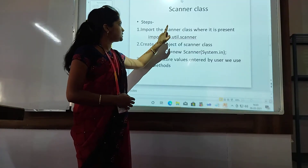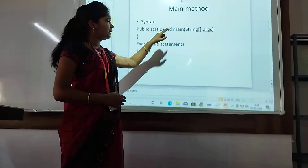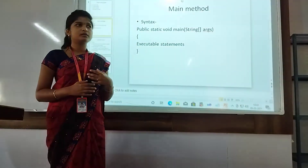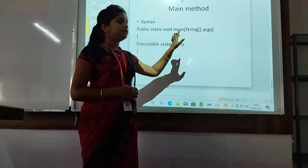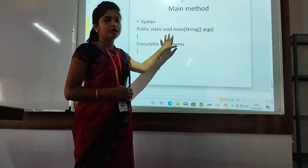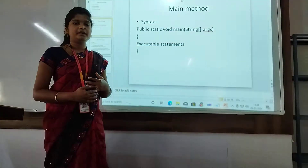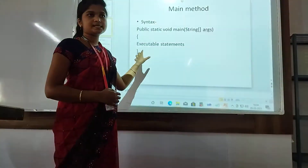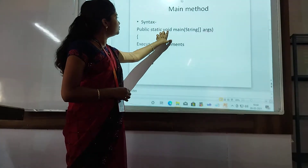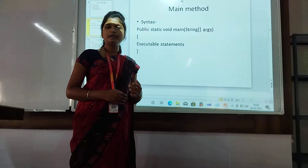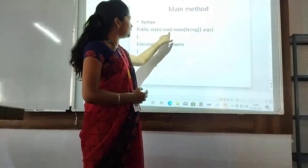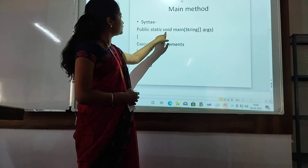The next keyword is void, which is the return type. The main method uses void because if we use any other data type like integer, float, or double, then we have to include a return statement as the last mandatory statement. But if we use void, then we don't have to return any kind of value. So the main method does not return anything, and that is why we use void.